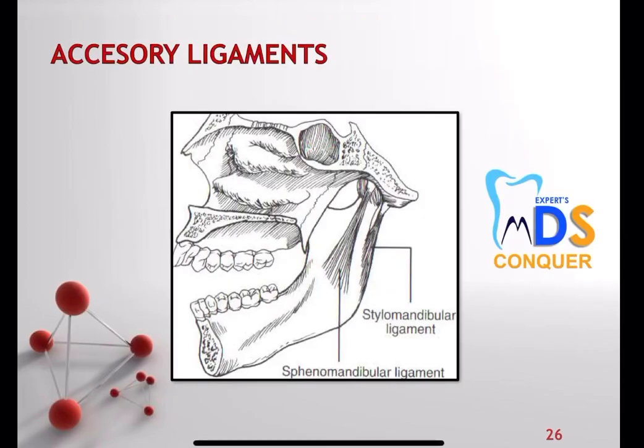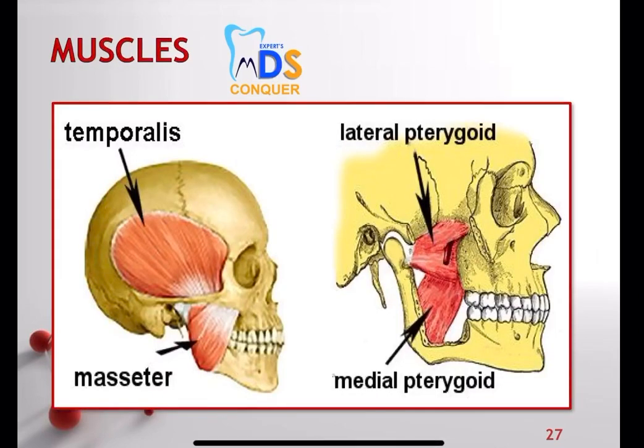For the accessory ligaments — stylomandibular and sphenomandibular — you can draw the diagram and just mention them; that is enough. Coming to the various muscles: the temporalis, masseter, lateral pterygoid, and medial pterygoid. A separate presentation will be made on muscles of mastication. For an essay question you have to mention the muscles of mastication along with their origin, insertion, and functions.